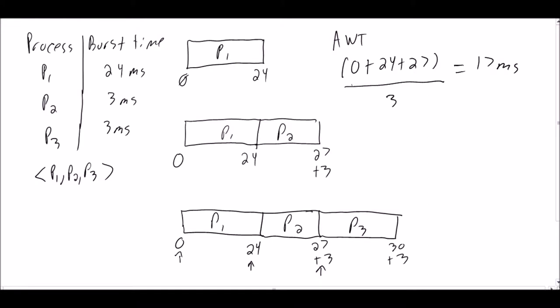And so the reason why we didn't add 30 is because we don't have any other processes after process 3 that are waiting to be executed. Hence the name average waiting time.